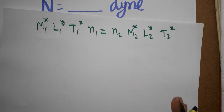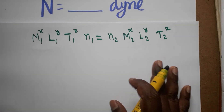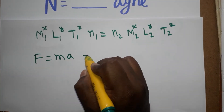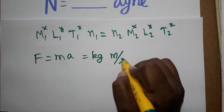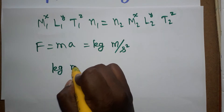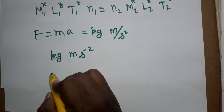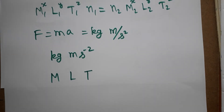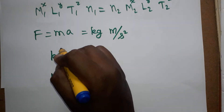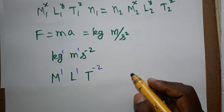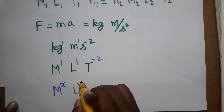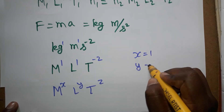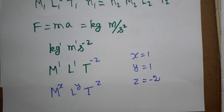Dyne and Newton have the same dimensional power. Force equals mass times acceleration, so the unit is kg·m/s², which we write as kg·m·s⁻². In dimensional terms: mass M has power 1, length L has power 1, and time T has power minus 2. So x = 1, y = 1, z = −2.